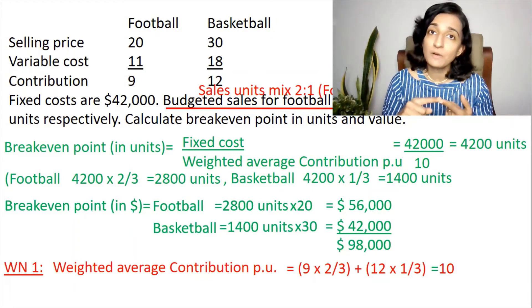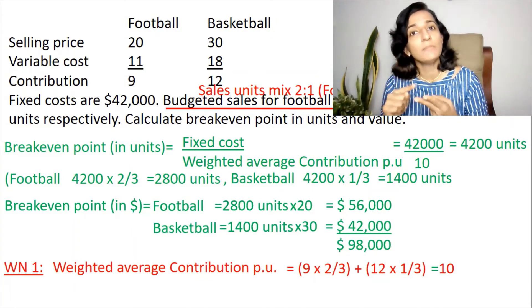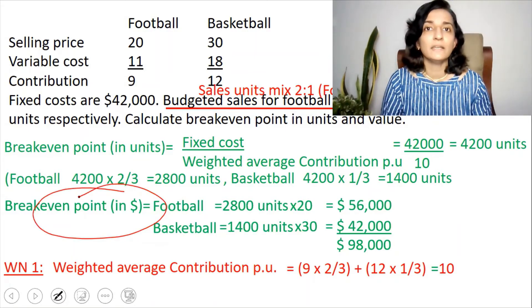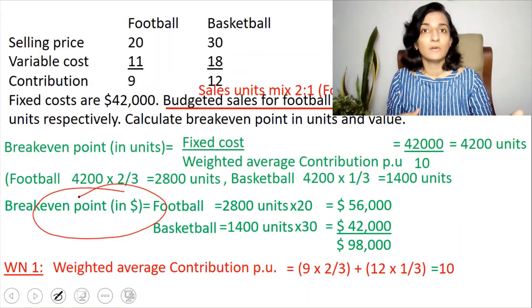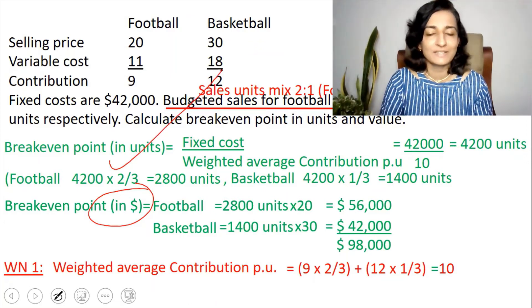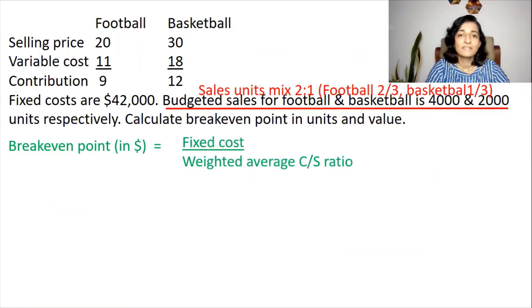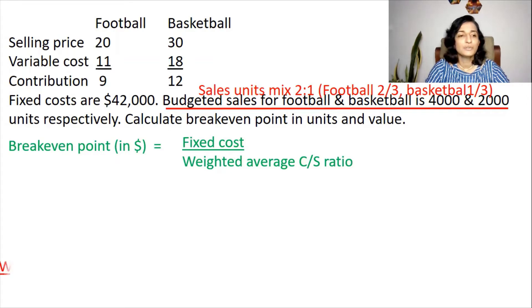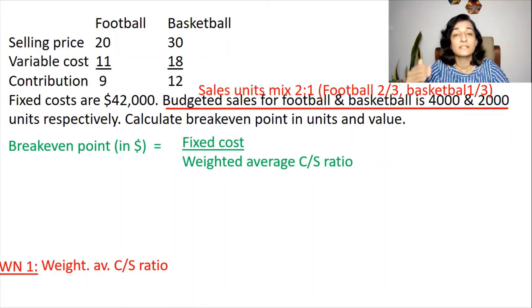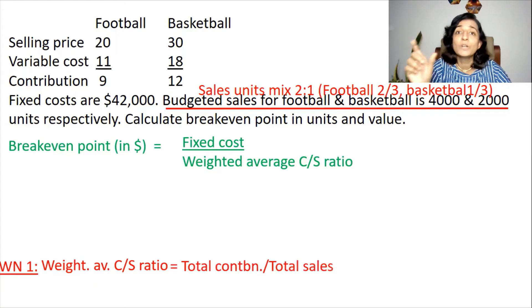We can also find the break-even point in dollar directly, without first finding units. The formula is fixed cost divided by weighted average C/S ratio. Recall that the normal C/S ratio is contribution divided by sales, so the weighted average C/S ratio is simply total contribution divided by total sales.